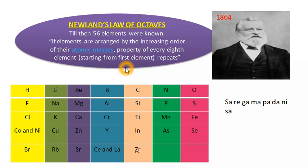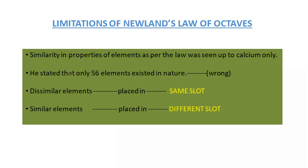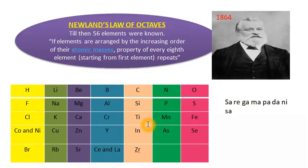However, there were certain limitations to Newland's classification. The first limitation was that the similarity in properties of elements as per the law was seen only up to calcium. After calcium, elements did not follow his law — every eighth element did not possess properties similar to the first. His law worked well for lighter elements, but for heavier elements beyond calcium, it was not applicable.